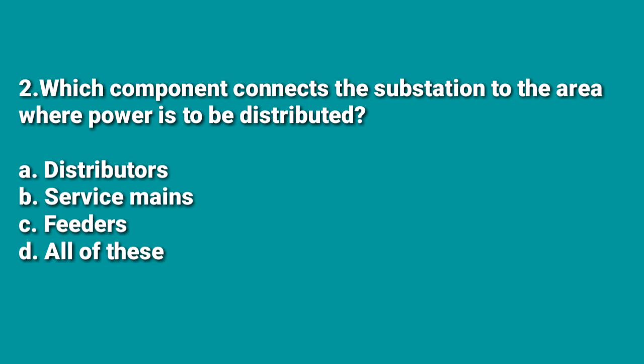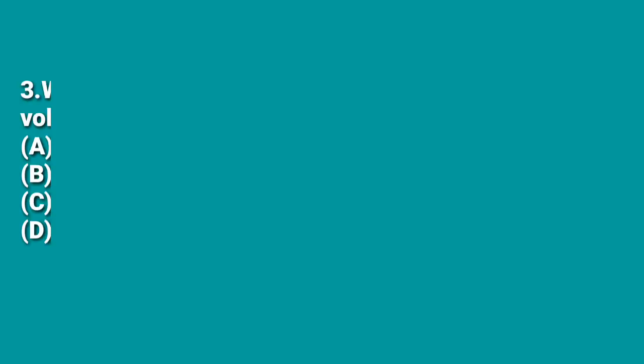The second question is: which component connects the substation to the area where power is to be distributed? A: distributor, B: service mains, C: feeder, D: all of these. Normally from the substation, power is transmitted in the form of feeders, hence C (feeder) is the correct answer. Feeders are connected to distributors.